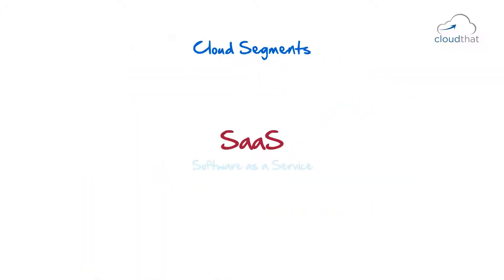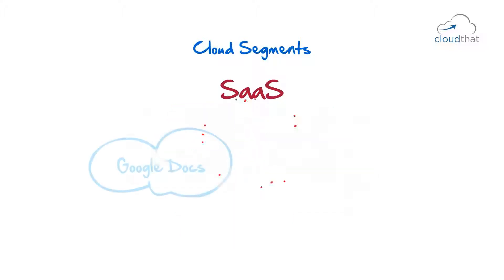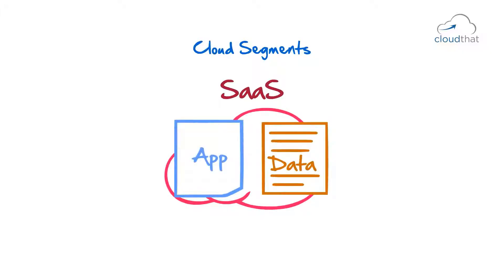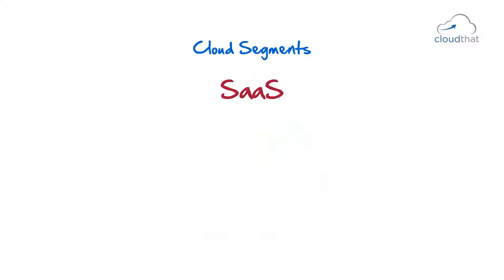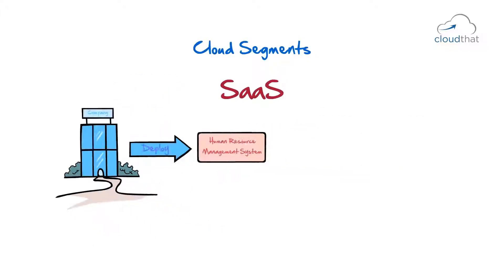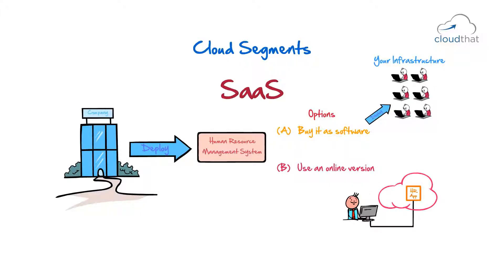SaaS — Software as a Service — is where your application and data are both in the same place. For example, Google Docs, Salesforce, etc. Any service which has its application and data in the same location and which provides you APIs with which you can interact. For example, let's say your company wants to deploy a human resource management system. You have the option to buy it as a software and deploy it in your own infrastructure, or use an online version of it where everything will be readily deployed for you.